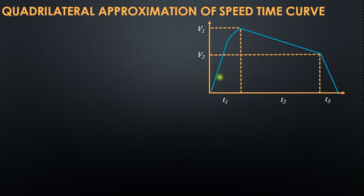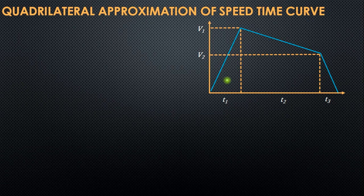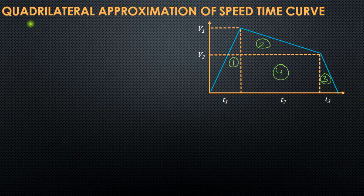This curve has nonlinearity in the acceleration period, while the coasting and braking periods are linear. So its linear approximation could look something like this, where we approximate this curve with a straight line. The area under this curve could be calculated by finding the area of three triangles plus the area of a rectangle. Let us see how we can simplify this curve using the quadrilateral approximation.